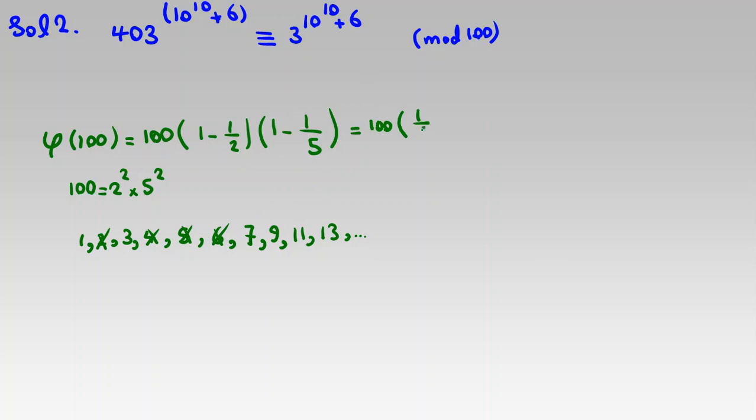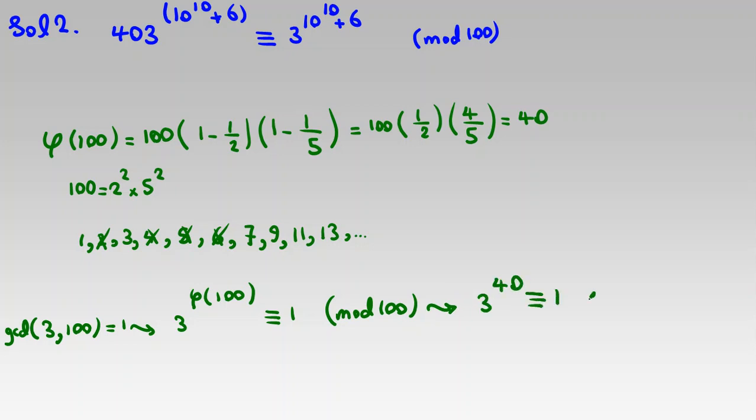So 100 times 1 minus 1 half is 1 half, times 1 minus 1 over 5 is 4 over 5. 5 times 2 is 10. It will be 40. In solution number 1, I've used this for this. Now we have an important formula, because 3 and 100, their GCD is 1. I can say 3 to the power of phi of 100 is congruent to 1 mod 100. And it will be so much useful. So 3 to the 40 is 1 mod 100. Now I want to calculate 3 to the power of 10 to the 10 plus 6. I should understand this power. Because I know each 40, when I multiply, it will be 1. So I should find the remainder of this number when divided by 40. So I focus on 10 to the 10 plus 6 mod 40.